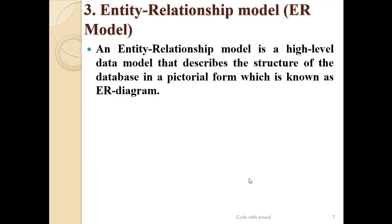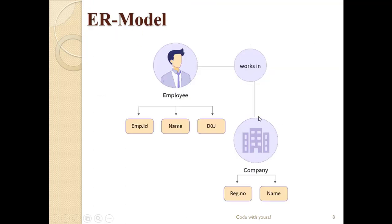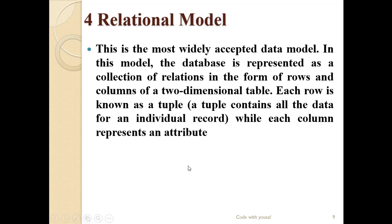The third one is the entity-relationship model, commonly known as the ER diagram. The ER model is a high-level data model that describes the structure of a database in a pictorial form. For example, we have two entities — company and employee — and the employee works in the company. Each entity has its own attributes: company has registration number and name, and employee has employee ID, name, and job.